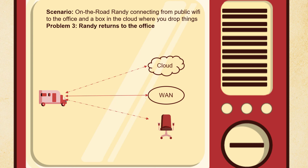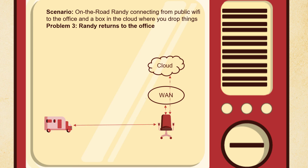Problem three: good old Randy returns to the office. He's directly connected to the office LAN and behind the office firewall. But Randy has returned infected. Without protection, this is going to start spreading all over the network — you might even become a site broadcasting more malware to other places. We fix that by deploying a NAC that says: 'Hey Randy, you appear to be infected, you're misbehaving — we're going to cut you off, put you in a quarantine VLAN, and send you a notification to go talk to tech services.' And there you have it: Randy's three problems solved by protecting these edges.